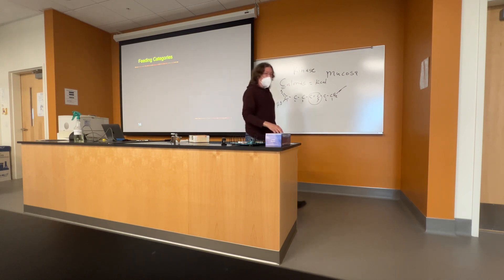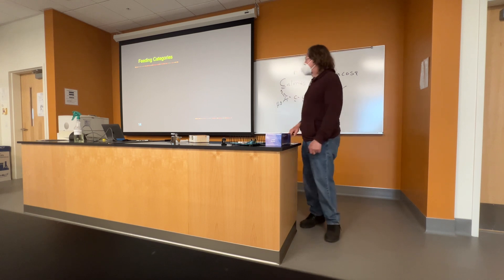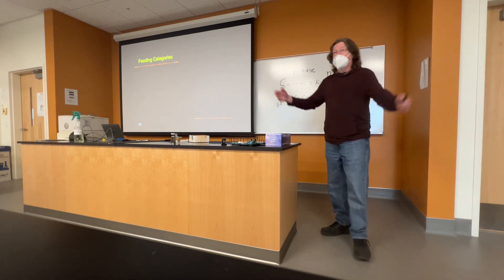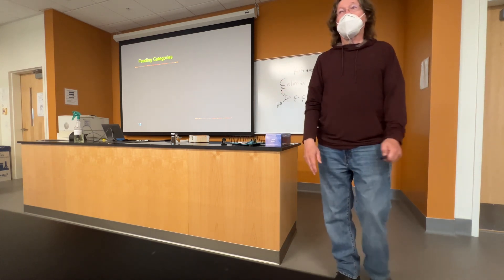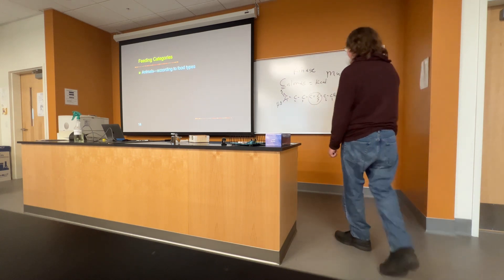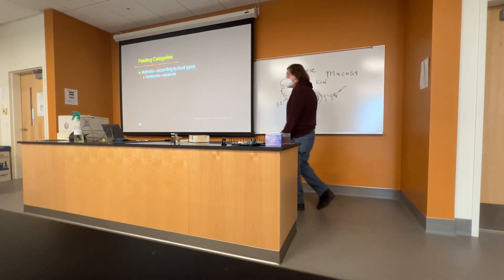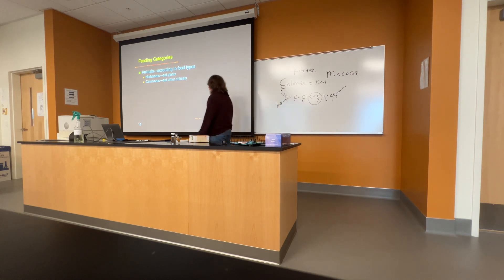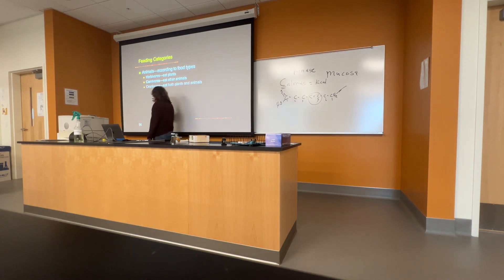Now, as far as animal nutrition, a lot of times we like to categorize animals by what they eat. Traditionally, we always did this by food types. So, herbivore eats plants. A carnivore eats other animals. Omnivore eats both. But that doesn't exhaust everything. And it's sort of simple.